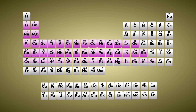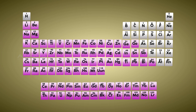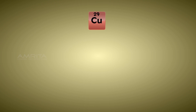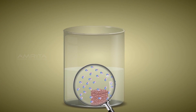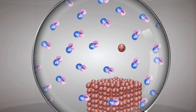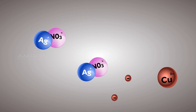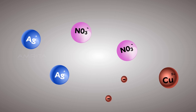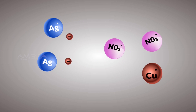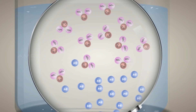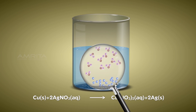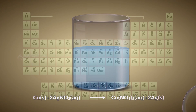The displacement reactions are very common in metals. Let's consider a reaction between copper metal and silver nitrate solution. Here, copper displaces silver from the aqueous solution of silver nitrate.